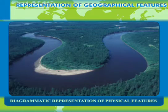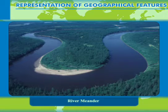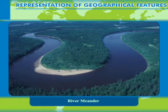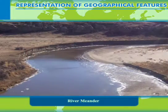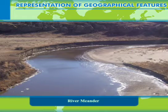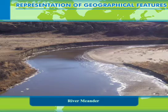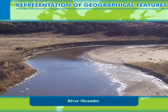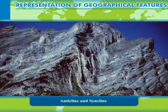A meander, in general, is a bend in a sinuous watercourse or river. A meander forms when moving water in a stream erodes the outer banks and widens its valley, while the inner part of the river has less energy and deposits silt.